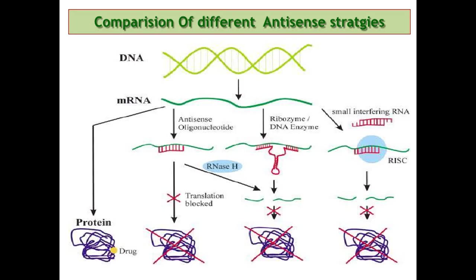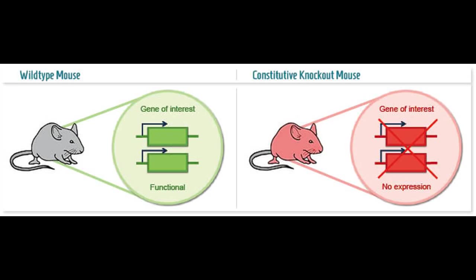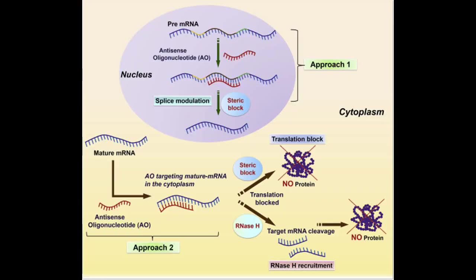This interruption, sometimes referred to as knockdown or knockout depending upon whether the message is either partially or completely eliminated, allows researchers to determine the function of that gene. Antisense oligonucleotides represent the most common approach.